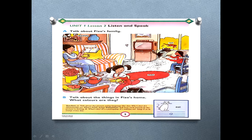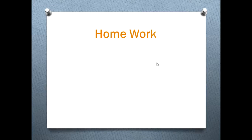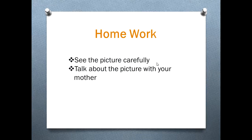That's it for exercise A. Exercise B is: talk about the things in Fiza's home and what colors they are. Now it's time for homework. The homework is to see the picture carefully and talk about the picture with your mother and then your English teacher. Thank you.